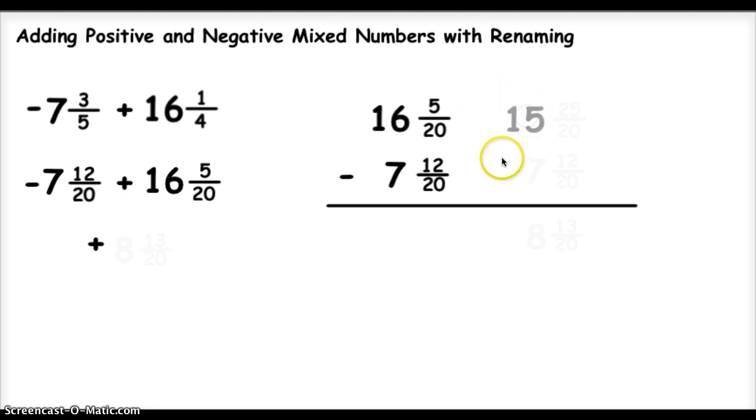When I do that, I'm going to be left with 15 whole numbers. Now, with that one I borrowed, I'm going to cut that into 20 pieces, because my denominator is 20. Those 20 pieces, along with the 5 pieces I had in the fraction, will make 25 20ths.